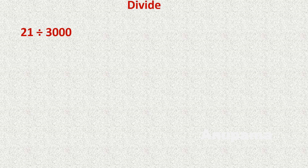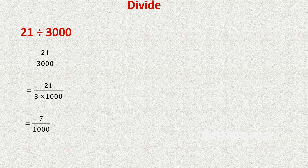Let us do another type of question: 21 divided by 3000. We write it as a fraction: 21 over 3000. We can write 3000 as 3 multiplied by 1000, giving 21 over (3 × 1000). We divide 21 by 3 — since 3 sevens are 21, the numerator becomes 7 — giving 7 over 1000. Converting to a decimal: 0.007.